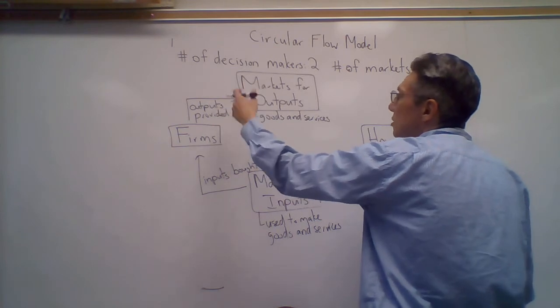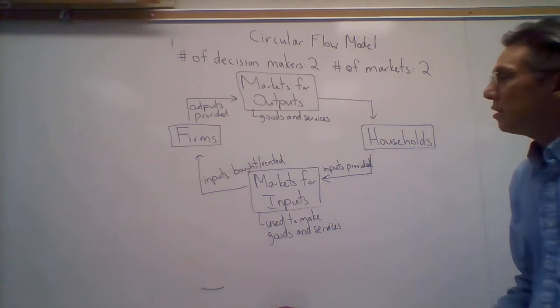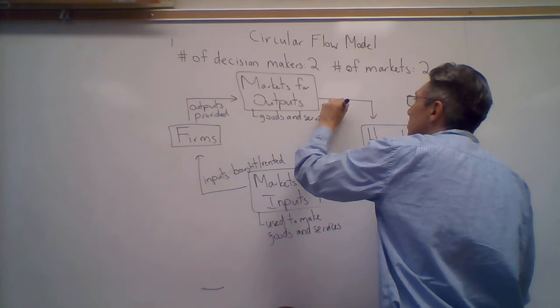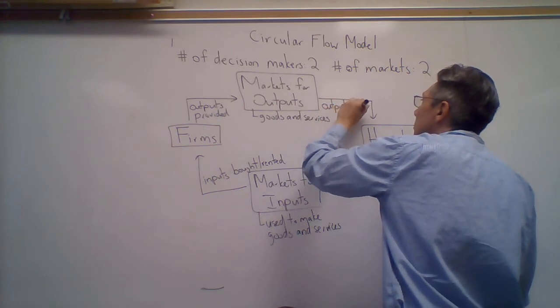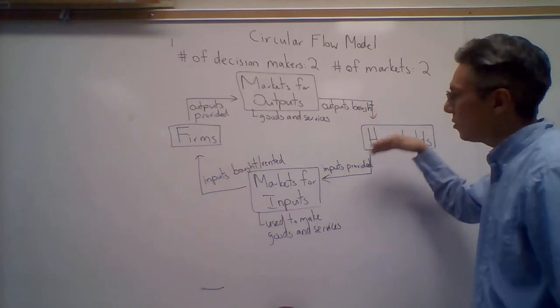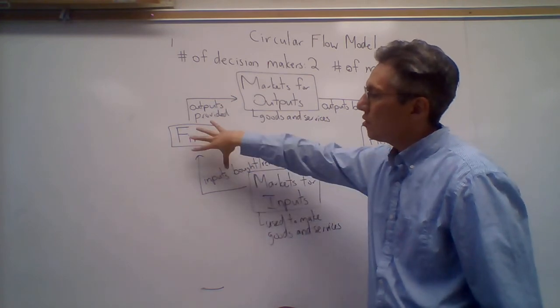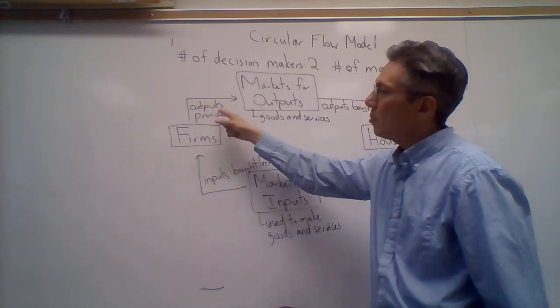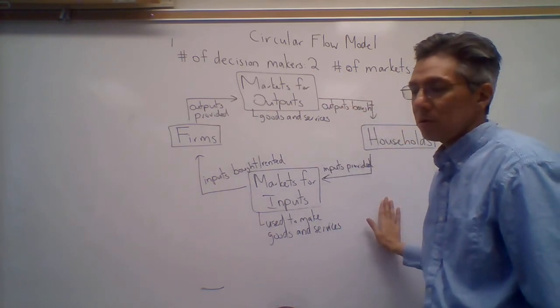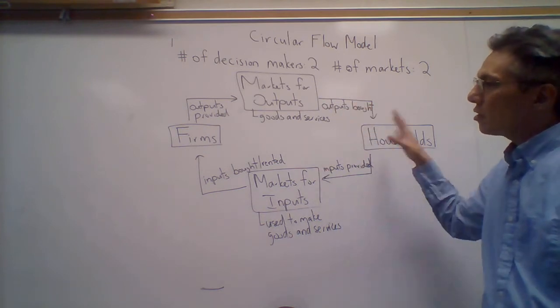These outputs are provided and then bought by the households. So in the circular flow, the inputs are provided by households, then bought or rented by firms, which turn these inputs into outputs that they supply, which are then bought by the households. This has to do with the flow of goods and services.